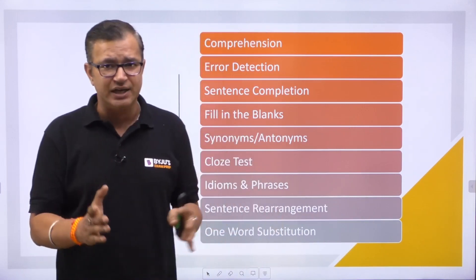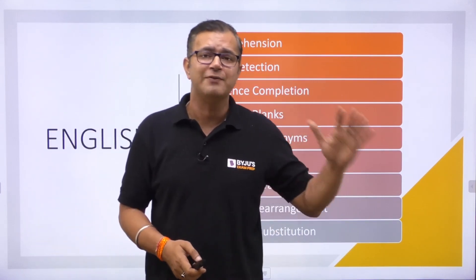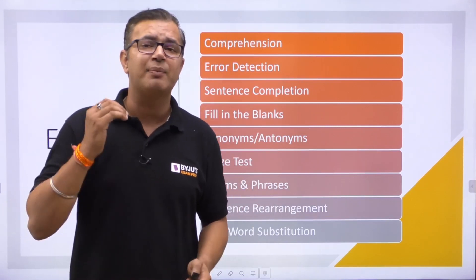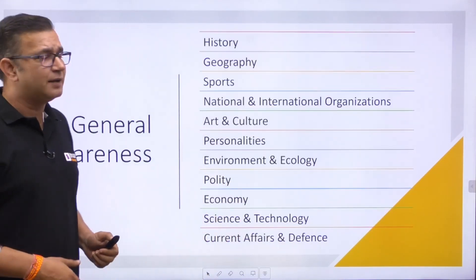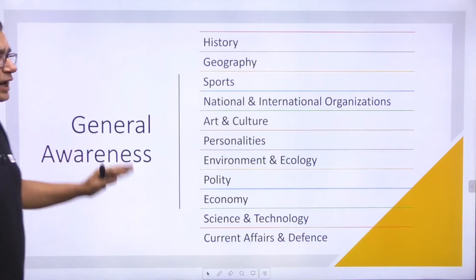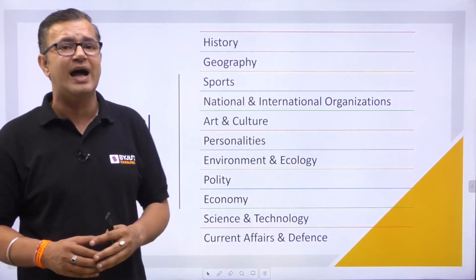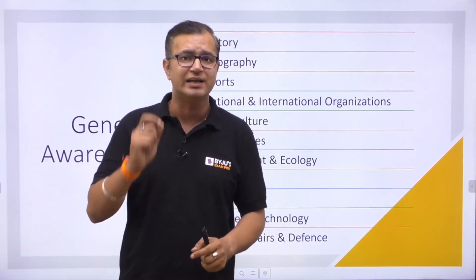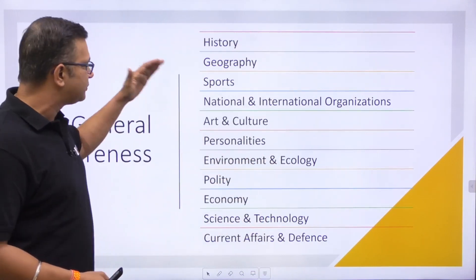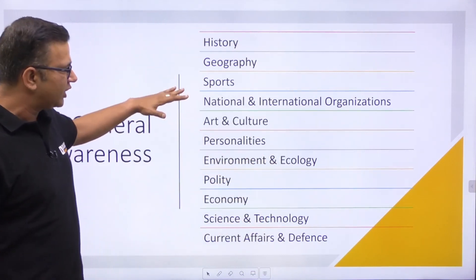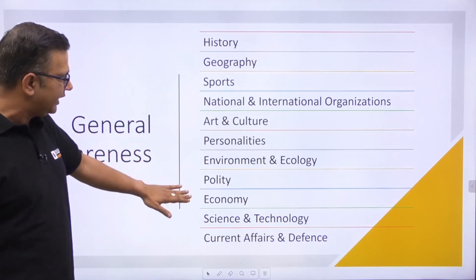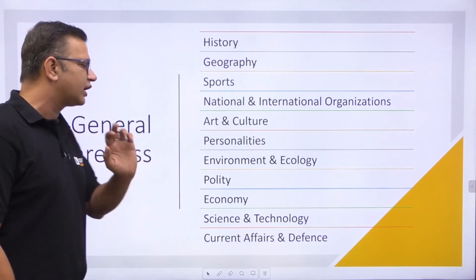Across all sections in your exam, English has the maximum number of questions and is therefore the most important section. For General Knowledge and General Awareness, there are maximum questions from static GK, and along with that, topics include history, geography, sports, national and international organizations, art and culture, personalities, environment, ecology, polity, economy, science and technology, and current affairs and defense.